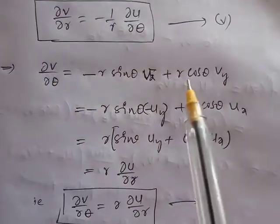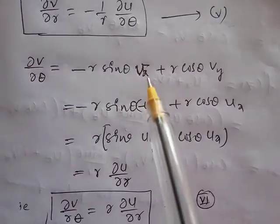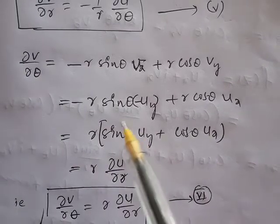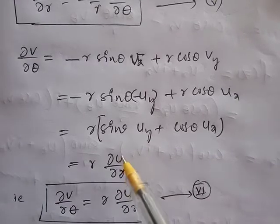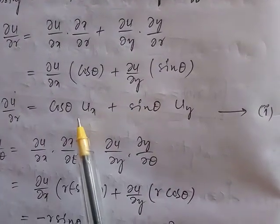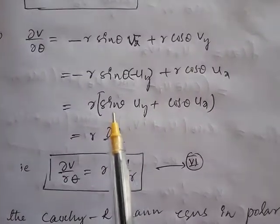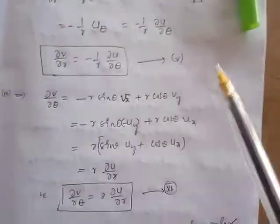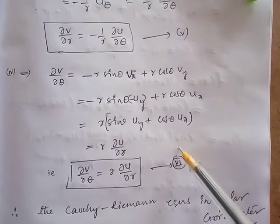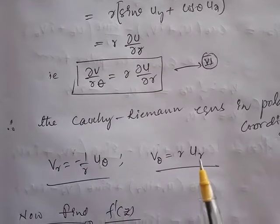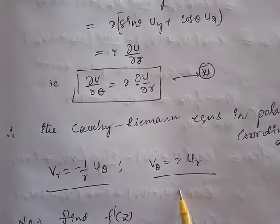Now consider the fourth equation: ∂V/∂θ = -r·sinθ·Vx + r·cosθ·Vy. Using Cauchy-Riemann: Vx = -Uy and Vy = Ux. Substituting and taking r as common, we get ∂V/∂θ = r·(cosθ·Ux + sinθ·Uy), which equals r·∂u/∂r (equation 1). These two equations are called the Cauchy-Riemann equations in polar form: Vr = (-1/r)·Uθ and Vθ = r·Ur.